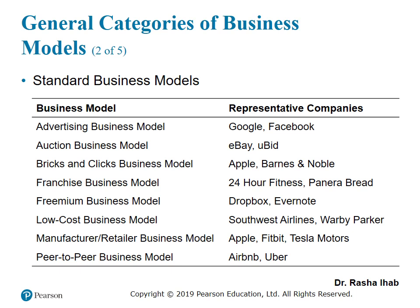Another example is the peer-to-peer business model. They matchmake between individuals with a service to offer and those who want the service. For example, Uber is a perfect example of peer-to-peer. They're just matching the drivers of the cars to the people who want rides, so they are matching people with each other.